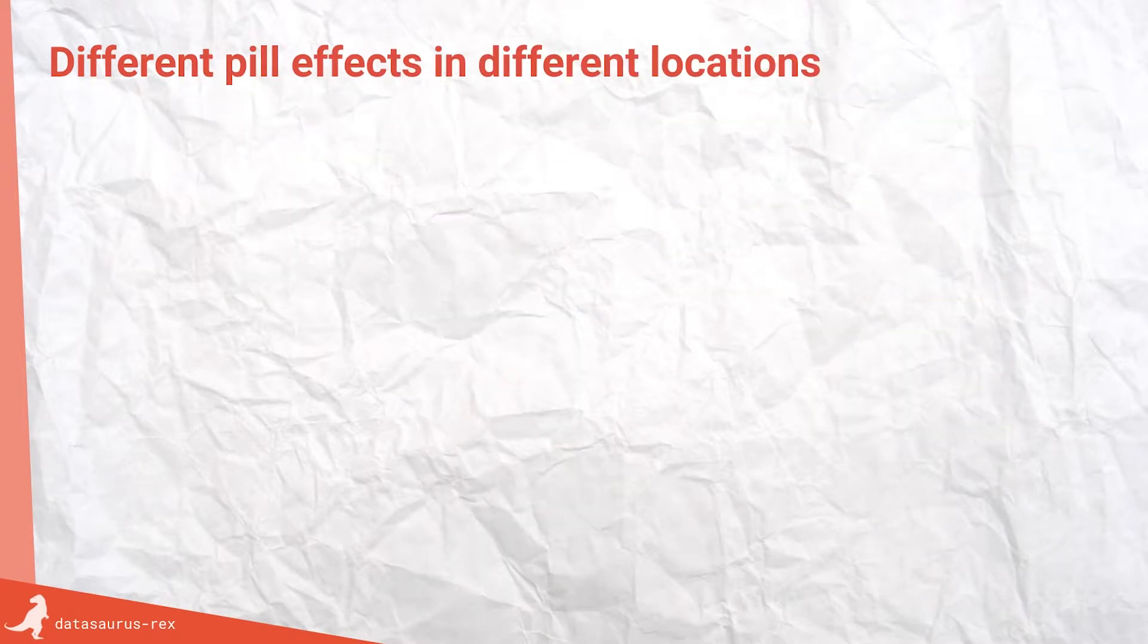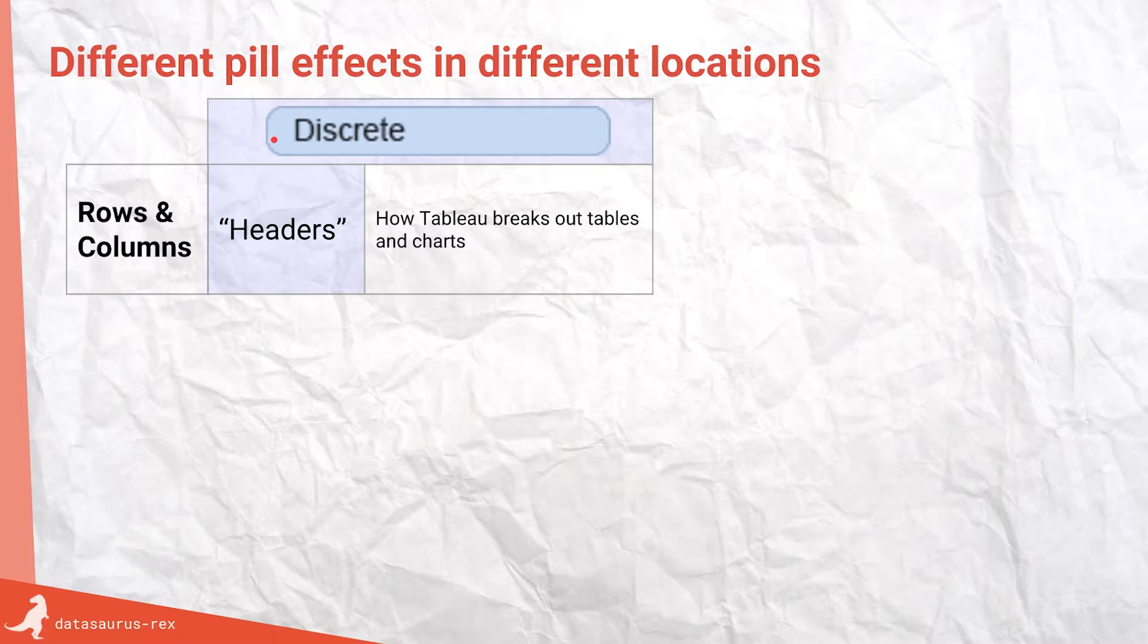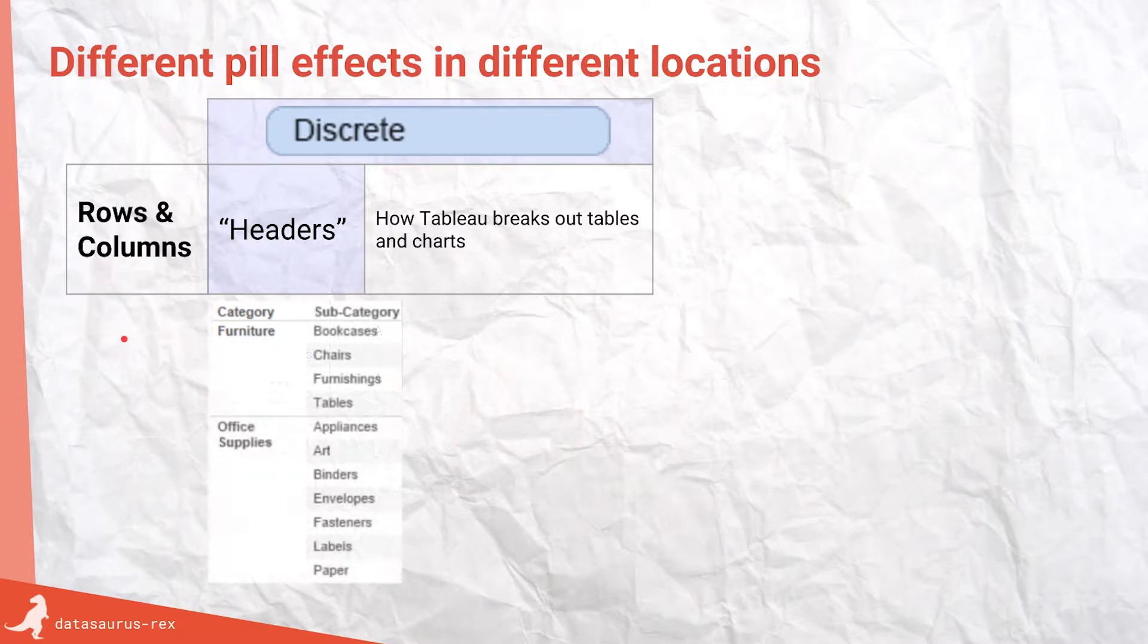They have different effects when you put them into different locations. So let's just cover those. When you put them into rows and columns, with discrete blue pills, treat them like headers. It's how you break out or segment your charts. So here, look, we put category in and we've got one, two, three, very clear table. If we put two pills in, it's now broken out in a more structured way. But again, you're in control of this.